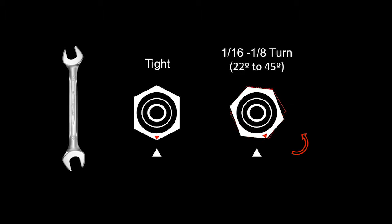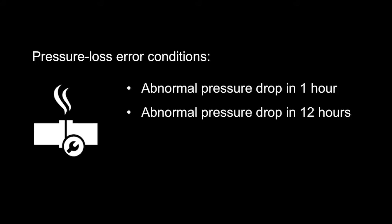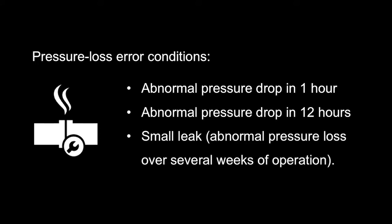If the leak persists, please contact Morgan Schaefer. Small leaks of calibration gas may be detected by watching for any of the following pressure loss error conditions that are based on readings from the calibration gas pressure sensor: Abnormal pressure drop in one hour, abnormal pressure drop in 12 hours, small leak, abnormal pressure loss over several weeks of operation.